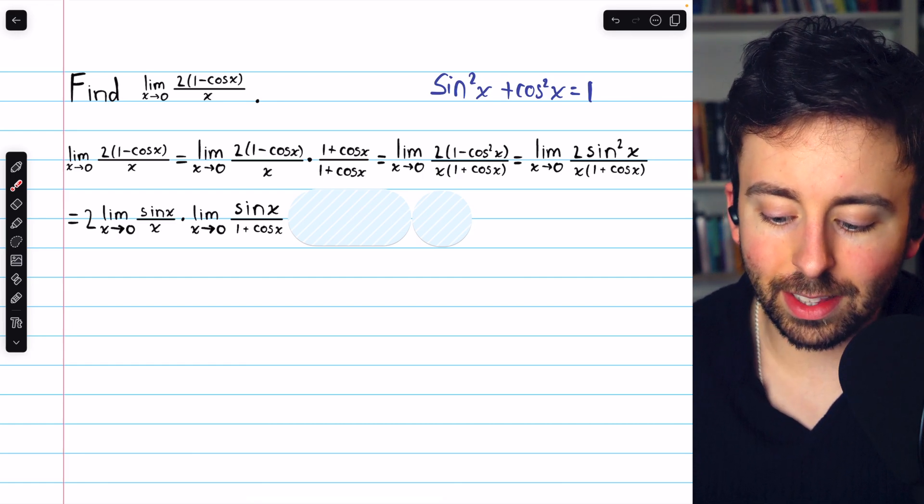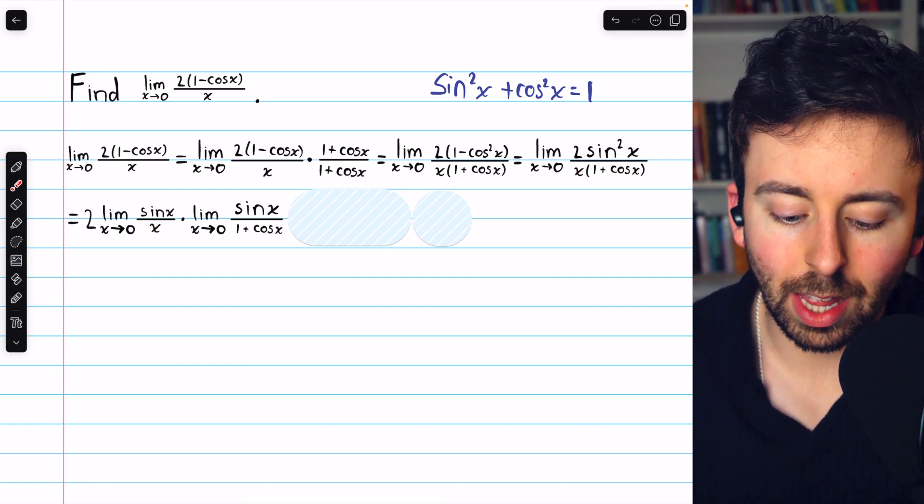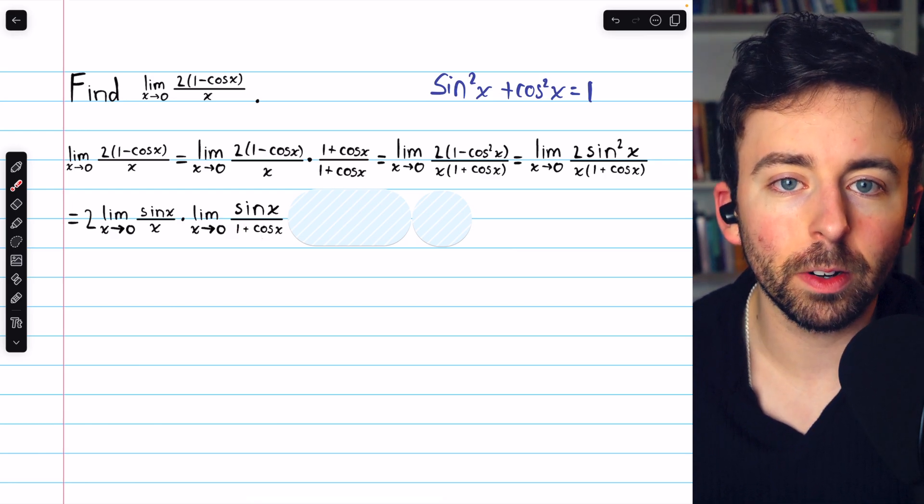And in the denominator, since we took the x out into its own limit, we're just left with 1 plus cosine x in the denominator.